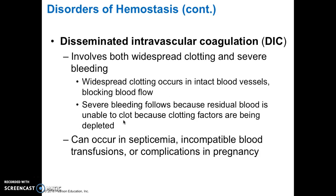Disseminated intravascular coagulation, or DIC, is a disorder that includes both widespread clotting and severe bleeding. The widespread clotting occurs in intact blood vessels, blocking blood flow. Severe bleeding follows because residual blood is unable to clot as the clotting factors are being depleted. DIC can occur in septicemia, incompatible blood transfusions, or complications in pregnancy.